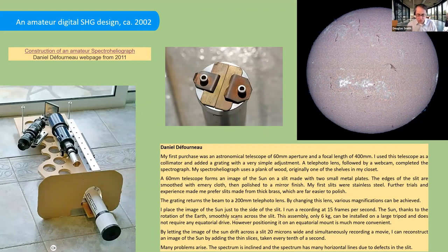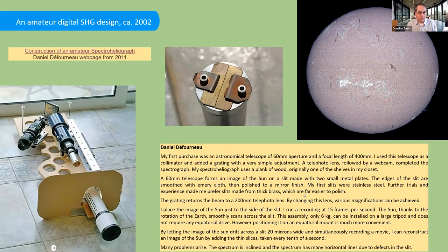He said his instrument weighed about six kilograms - the ones from the turn of the previous century were obviously like tons. He says he could run it at 15 frames a second, limited by the computers and cameras at the time. He was also a bit limited by the slits, which weren't particularly good - he had to grind them by hand. He didn't scan the slit across the sun except by just the sidereal rate of the sun moving across the slit. Today we'd probably scan at eight or 16 times that because we have better cameras and computers.